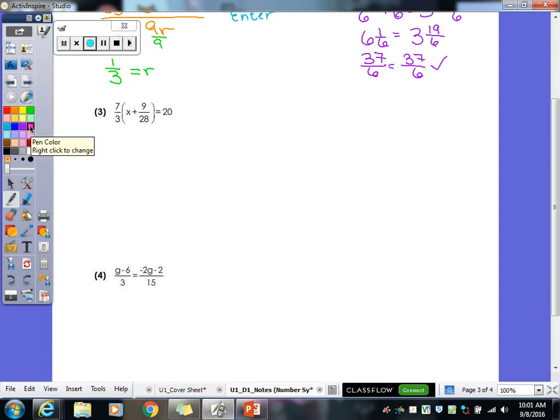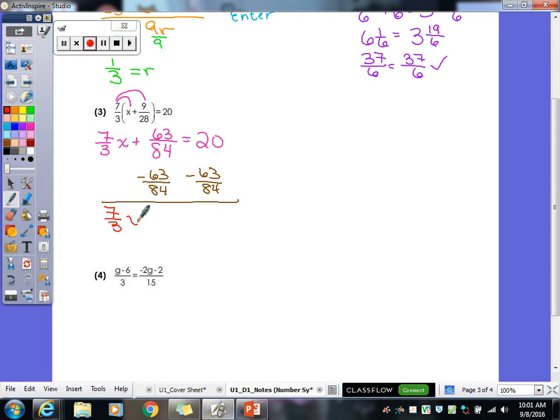Alright, number 3. We have some parentheses here. So, we've got to do our distributive property first. So, 7 times x would give us 7/3 x. 7/3 times 9/28. So, 7 times 9. 3 times 28. Yep. So, now what do we subtract over? 63 over 84. Now, I know you guys think this isn't fun, but this question was actually a question right off the Regents exam. They love fractions on the Regents exam. So, you've got to practice them.